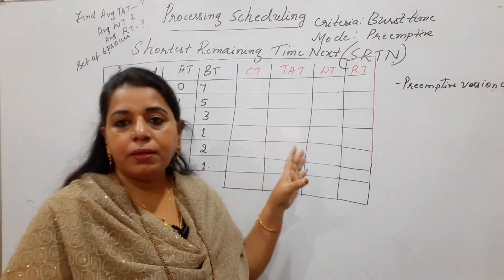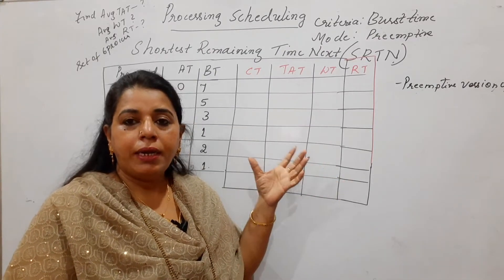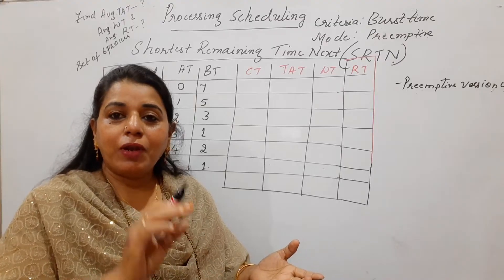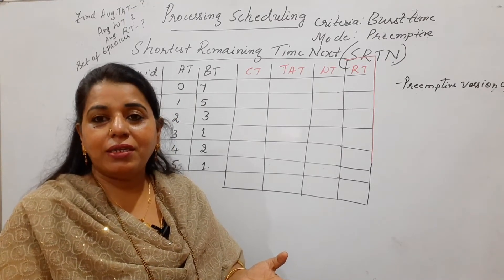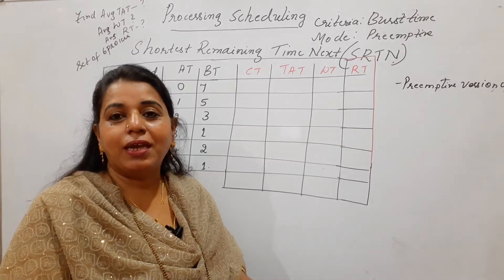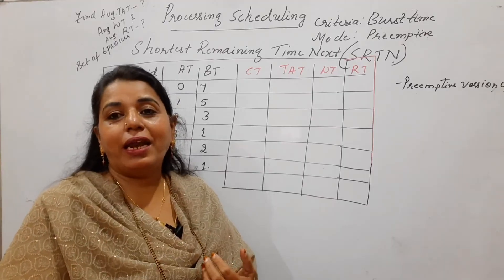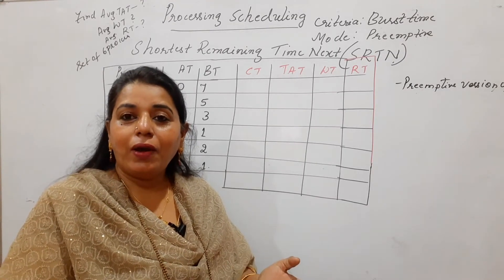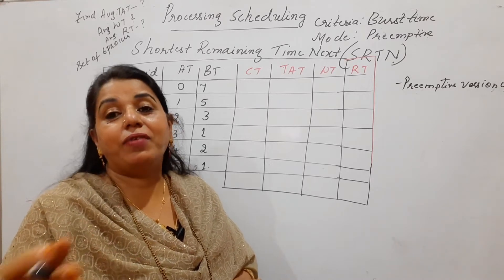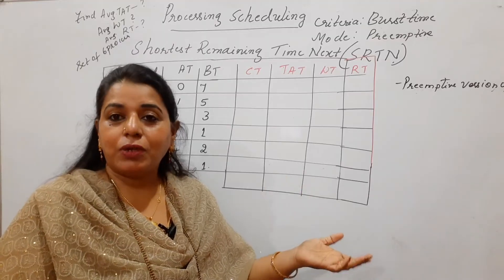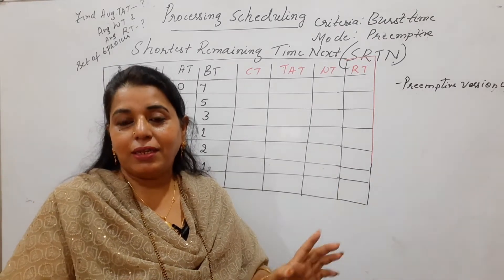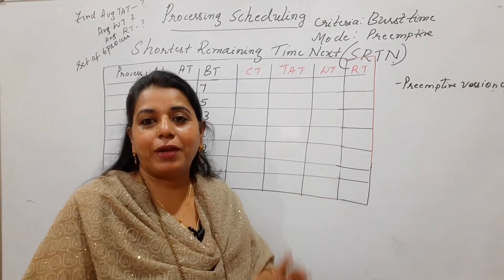Always use the Gantt chart so that you arrive at the values correctly. This algorithm is preemptive in nature and the criteria is burst time. A process is scheduled, but it will not complete its entire burst time at once. After every unit, it is checked whether any other process has arrived in the ready queue. If the arrived process has a shorter burst time than the currently running process, the current process is preempted and the new process is allocated to the CPU. That new process then becomes the current process, executes for one unit, and the check repeats.